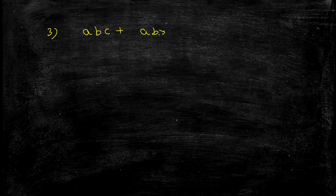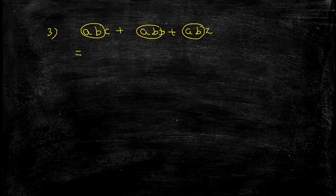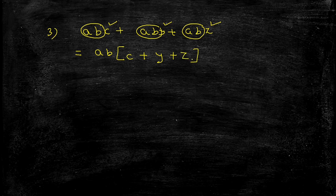Let's try: abc + aby + abz. The numerical coefficient is 1 throughout. We see that ab is common in all three terms. Taking out ab, we are left with c, then y, then z. So the factorized form is ab(c + y + z), and these two are the factors.